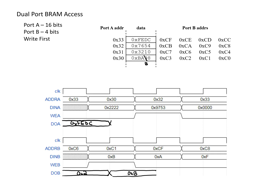Going back to look at port A, it is looking at address 30. This needs all 16 bits, and we have to remember that we did a write beforehand, so we're going to use the updated version. During this clock cycle, the value BAB8 is read out of this address.